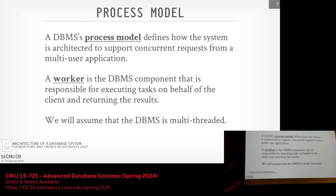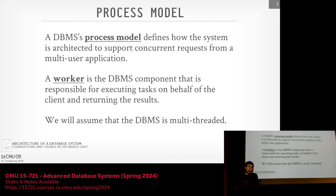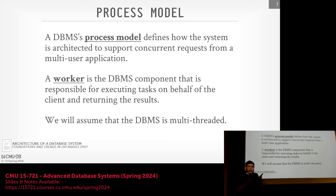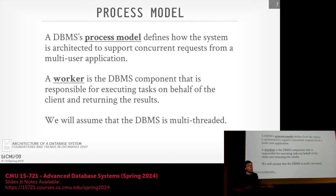There's a notion of a process model in any database system, which specifies what a worker actually is. Early database systems in the 1980s and early 1990s were process-based — every worker was a separate OS process, because portable threading like pthreads didn't really exist. Every modern system today is multi-threaded. The only ones that are not multi-threaded are those that fork Postgres, because Postgres uses a process per worker.